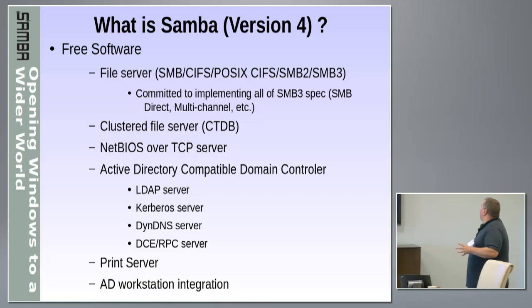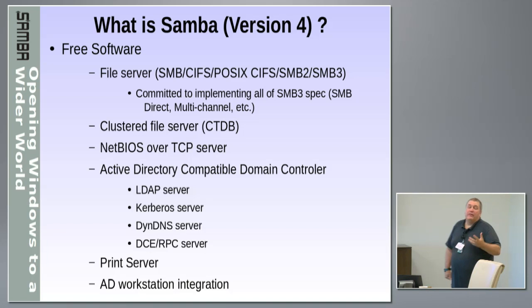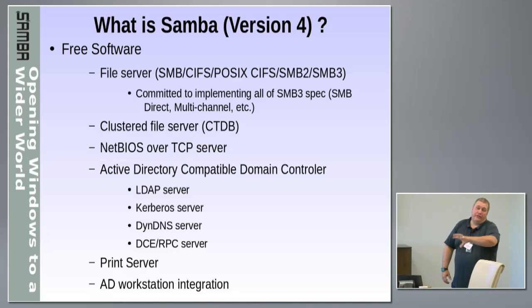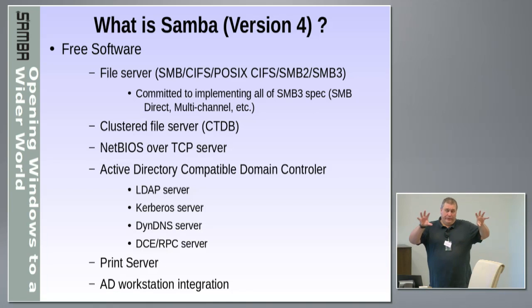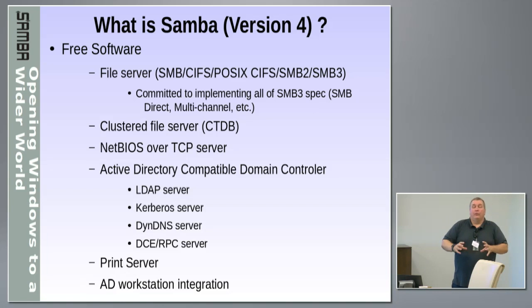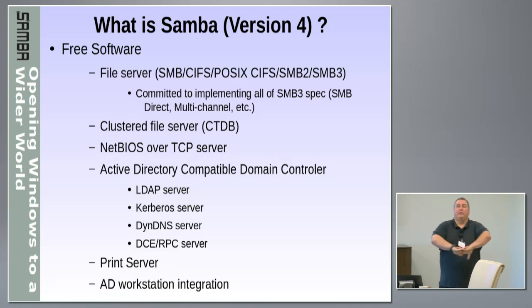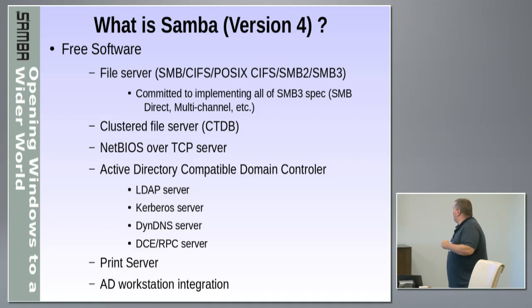Samba has a lot of things in it. The most useful thing that people know most about is the file server piece, and we're committed to implementing all of the SMB3 stuff, picking off pieces on the way. It's a clustered file server — we have a cluster manager, CTDB, which will allow multiple Samba front ends to appear as a single seamless file server once we have a coherent backend, a shared distributed file system backend. And it's a print server, for my sins — I still get print bugs to fix.